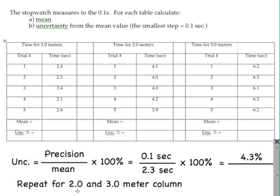So what I'd like you guys to do is repeat this for 2 meters up here and 3 meters up here. So again, you're going to add them up, divide it by 5 to get the mean. And then you'll do the exact same thing here. It'll be 0.1 seconds divided by the new mean. So this one will be closer to 4, and the time for 3 meters, it looks like it'll be closer to 6. All right, good luck.